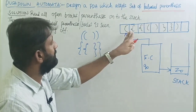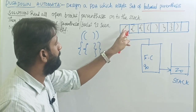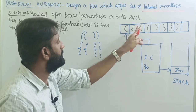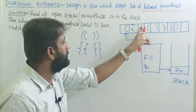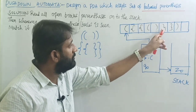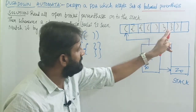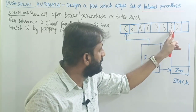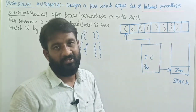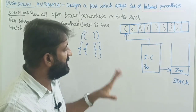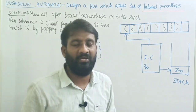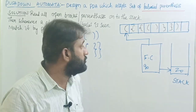I have written a string: open brace, open parenthesis, open parenthesis, open brace, close brace, close parenthesis, close parenthesis, close brace. For this type of string we are going to design the pushdown automaton.